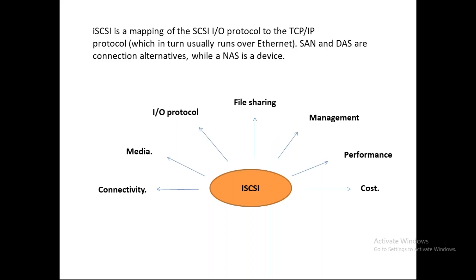Next, what is iSCSI? iSCSI is a mapping of the SCSI protocol to the TCP/IP protocol. SAN and DAS are connection alternatives, whereas NAS is just a device. iSCSI can be used for DAS and SAN device connections, or for a LAN dedicated to storage. The cost of iSCSI is relatively low — installation costs depend on the product, but iSCSI SAN is generally less expensive than fiber channel SAN.